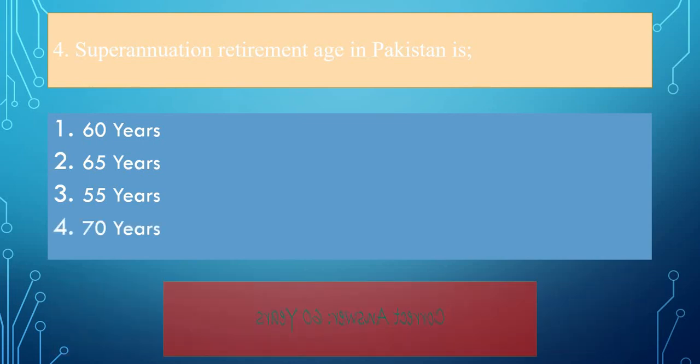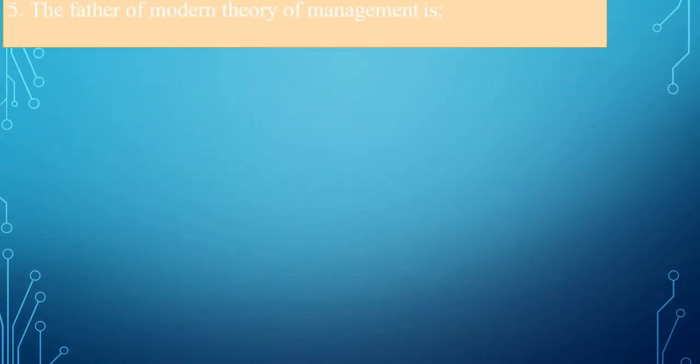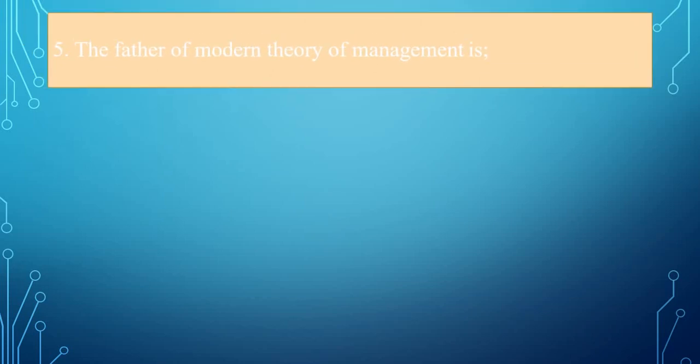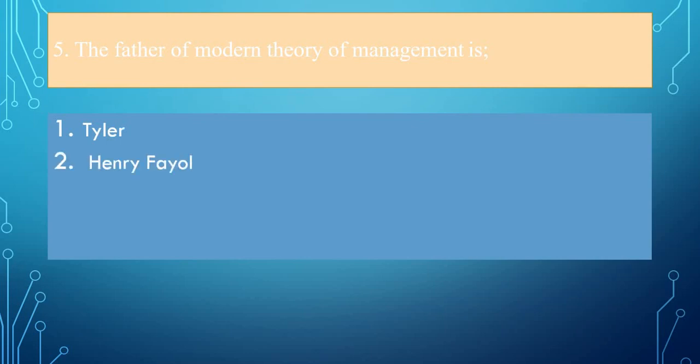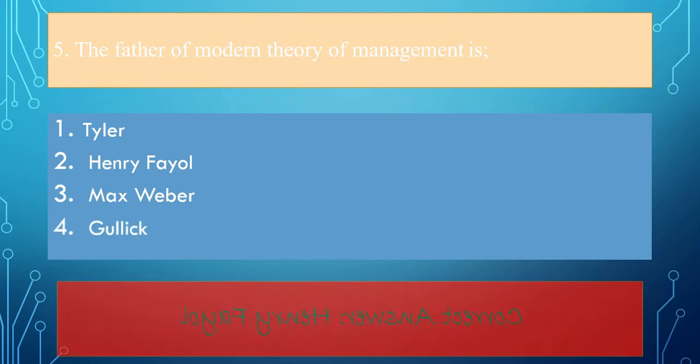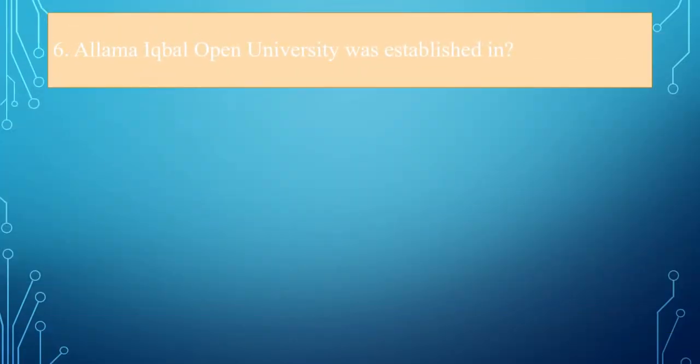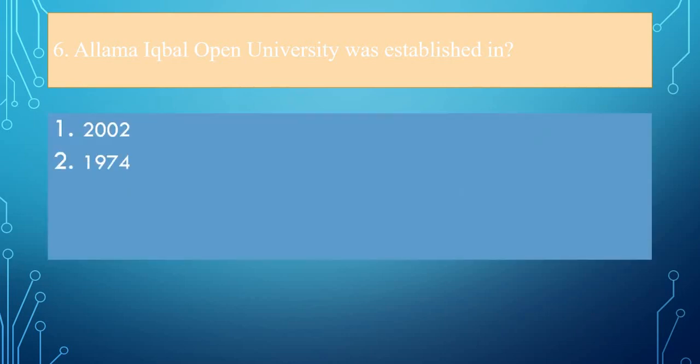Now come to the fifth question: The father of modern theory of management is Taylor, Henry Fayol, Max Weber, or Gulick? The correct answer is Henry Fayol.